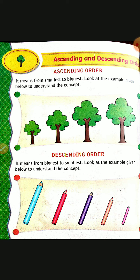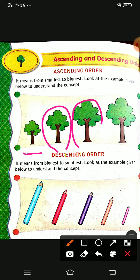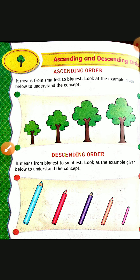What is ascending order and what is descending order? Let's see now. Ascending order means from smallest to biggest. You can observe here in the picture — there is a small tree, then a bigger one, and then the biggest. So size-wise, order-wise: small, big, bigger, biggest — from small to the biggest.